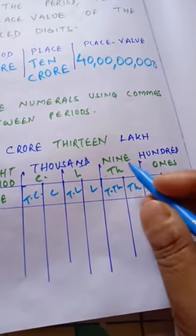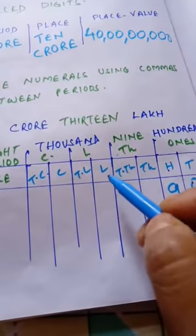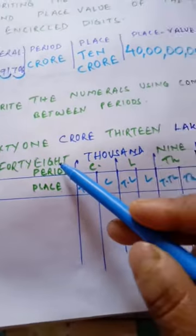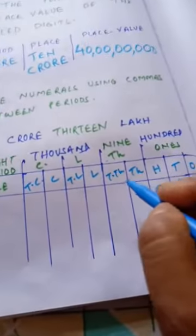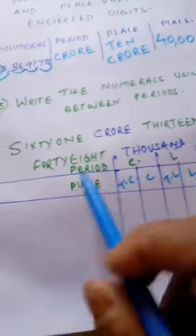At the hundreds place value, the digit is 9. Now it comes to the thousands period. It is 48,000. So I am writing here 48,000 in the thousands period.